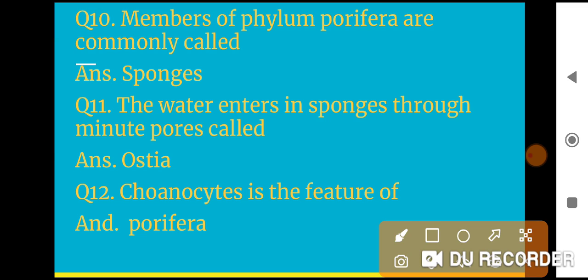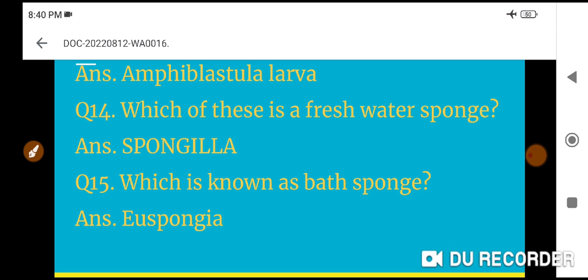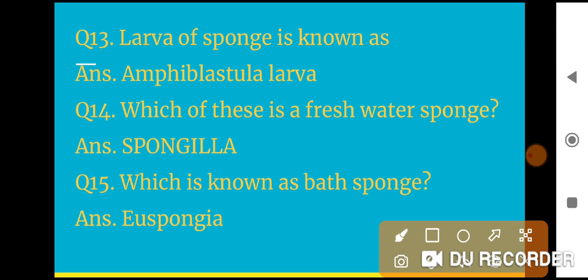Question 10: Members of phylum Porifera are commonly called sponges. Question 11: The water enters in sponges through minute pores called ostia. Question 12: Choanocytes is the feature of Porifera.